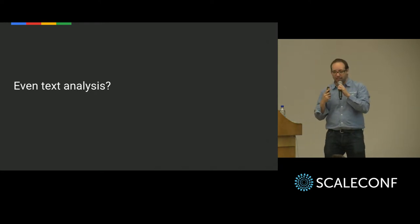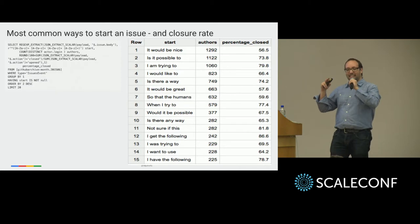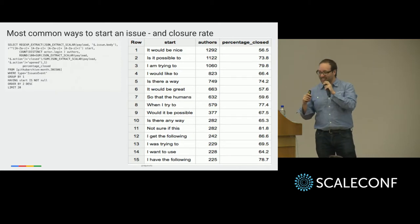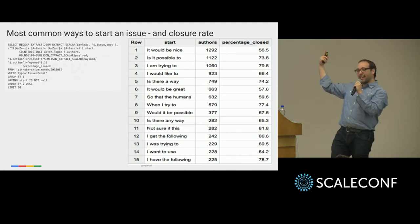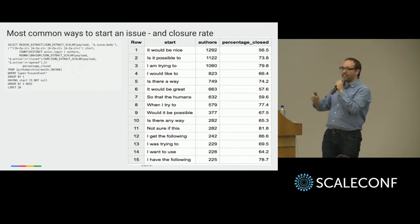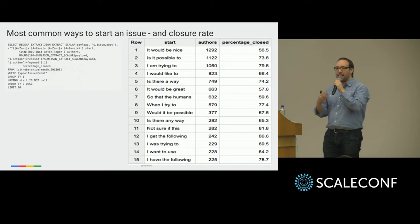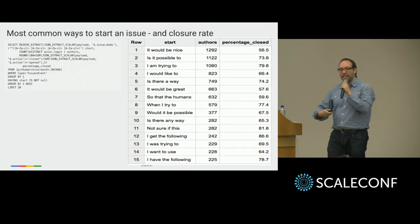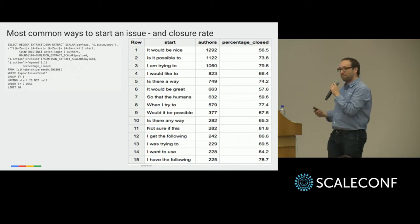Let's run some text analysis on issues. What are the most common ways to start an issue on GitHub? People really like starting their issues with 'it would be nice,' 'is it possible to,' 'I would like to' — people on GitHub are nice. But if you look at how many of these issues get closed: starting with 'it would be nice' gets 56% closure, versus 'is it possible to' at 73%. And the best way to get your issues closed is to say 'I get the following' — being concrete gets you 86% closure. The more concrete, the better responses you will get.